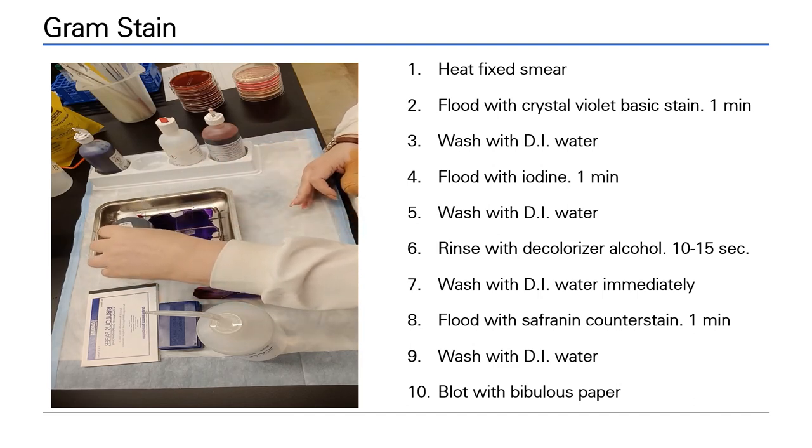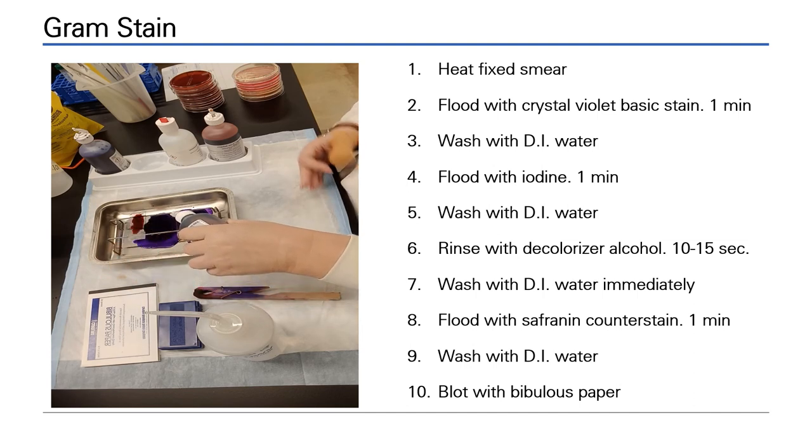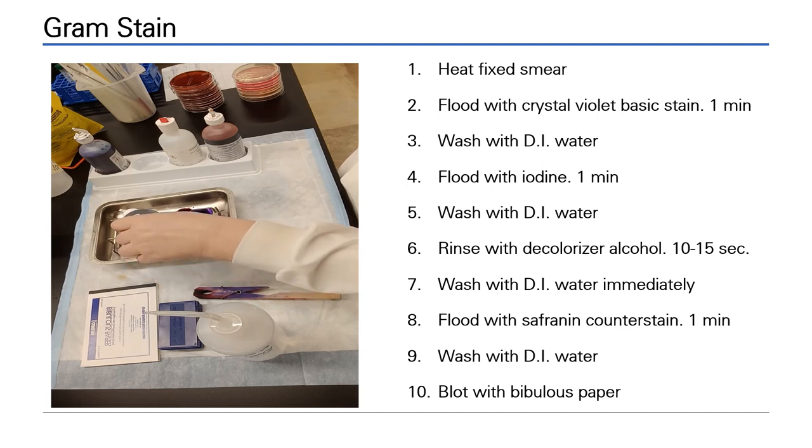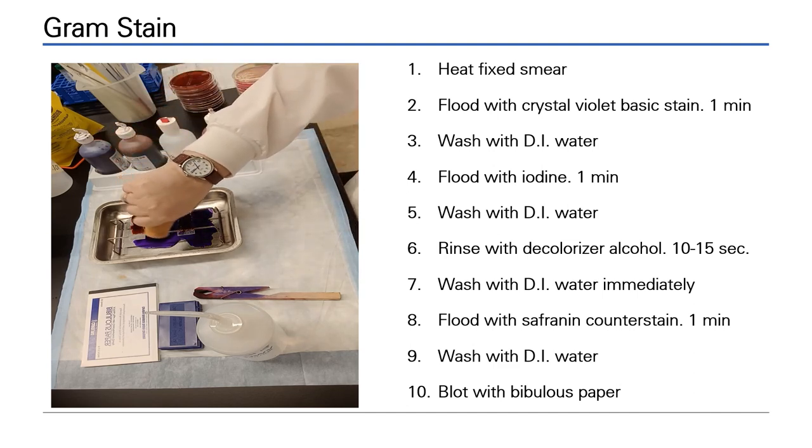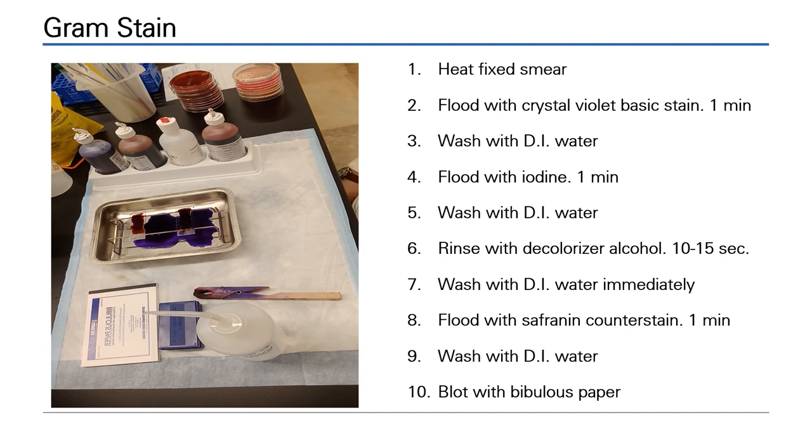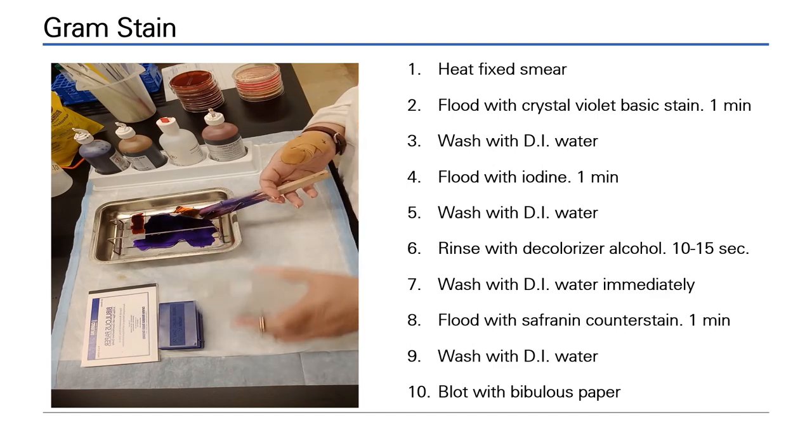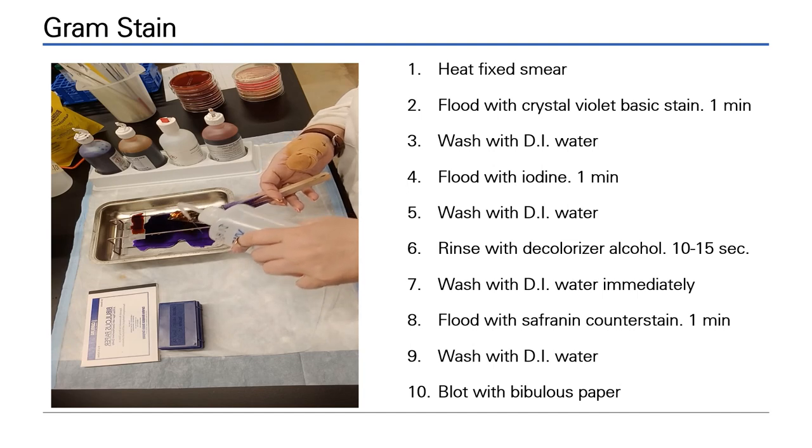Flood with iodine. Make sure that the entire specimen is always covered. Wait for a minute to stain. During this time, the iodine is also entering the cell wall and binding with the crystal violet making the first basic crystal violet stain less soluble. Again, carefully lift the slides. Angle them for washing. Always use a gentle flow of water.